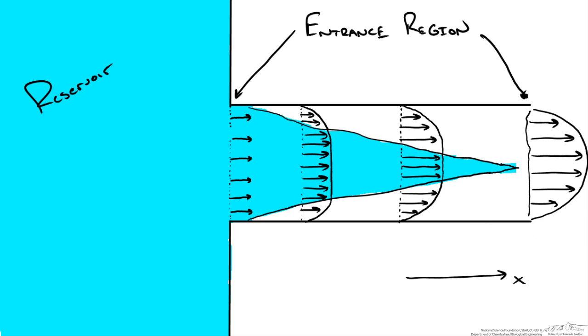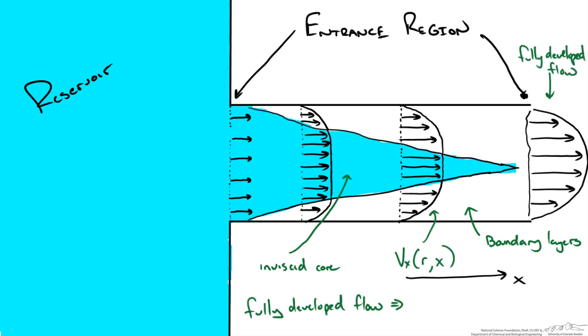So as we mentioned in terms of terminology, this inviscid core is where we have a uniform velocity distribution and the viscous effects are negligible. However within the boundary layer the viscous effects are not negligible, they are very significant. Hence why we have a change in velocity with radial distance. Once the boundary layers come together we get to fully developed flow. And remember that is where velocity in the x direction is only a function of radius.